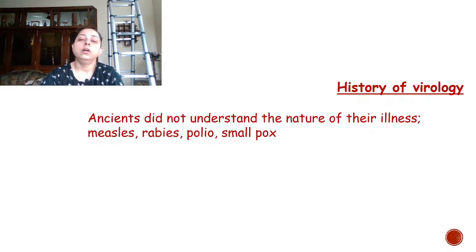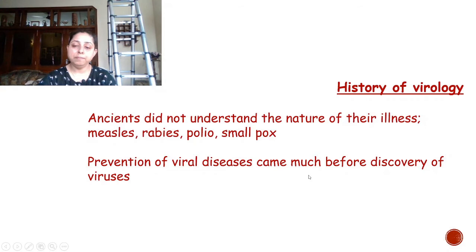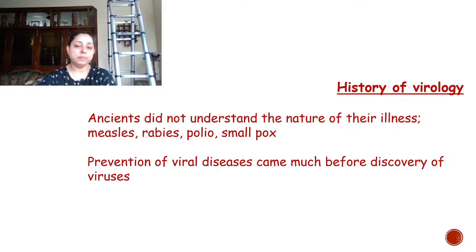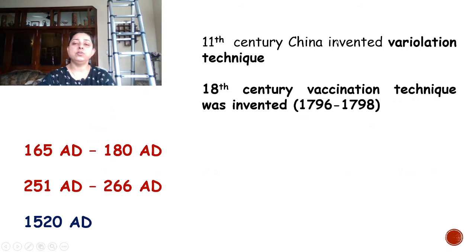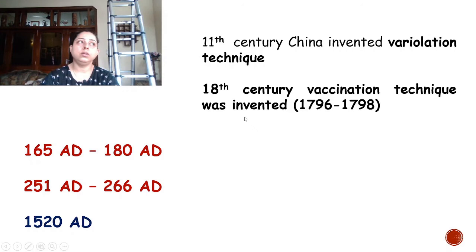The second important point in history is that prevention of viral diseases came much before the discovery of viruses. Before viruses were discovered as a separate infectious entity, techniques for preventing viral diseases were developed. There were two techniques: variolation and vaccination. In the 11th century, variolation was developed — originating in China. In the 18th century, vaccination was invented by Dr. Edward Jenner, the father of vaccination. I am going to explain all these events one by one.